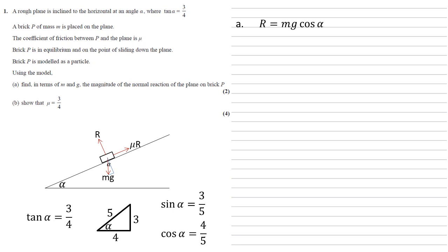So R equals mg cos alpha, hence R is four fifths mg. For part b, we need to show that mu, the coefficient of friction, is three quarters. So we've balanced perpendicularly. Now let's balance parallel to the slope. So we've got mu r going upwards.